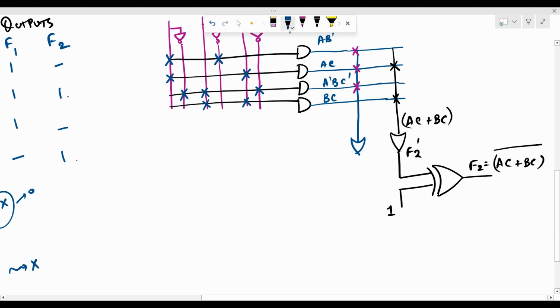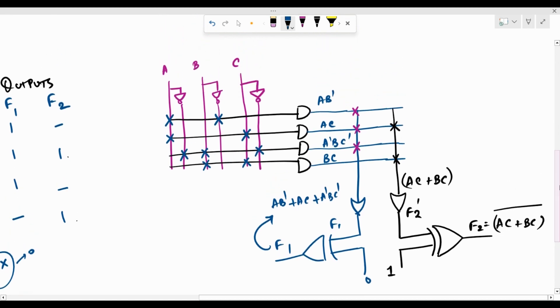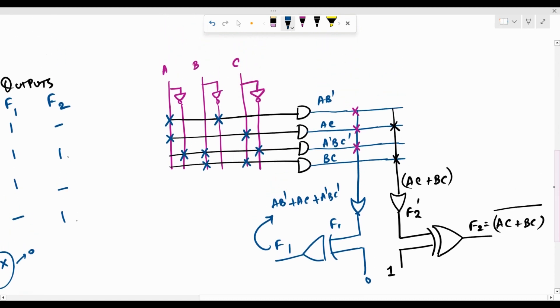On the other hand here, I can have this F1, because it's not complemented as such. What we are getting here is AB dash, AC, A dash BC dash, which is nothing but F1. So we need not invert this function. So we can provide 0 as the second input of my XOR. And then what comes out is F1 itself. So in this manner, we have been able to implement both the functions F1 and F2, both the outputs, using the programmable AND as well as programmable OR array, which is nothing but the PLA.